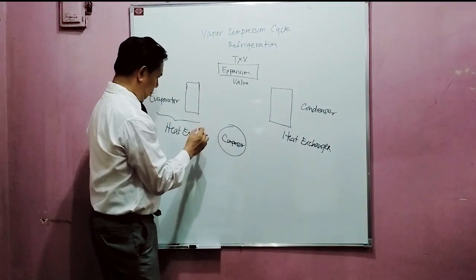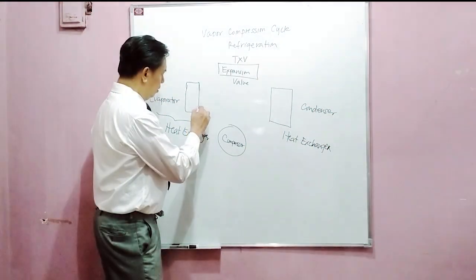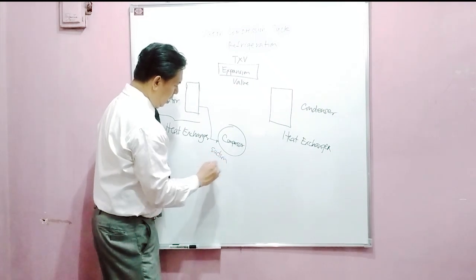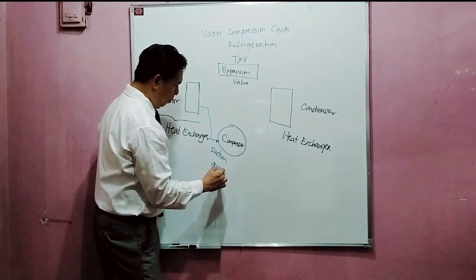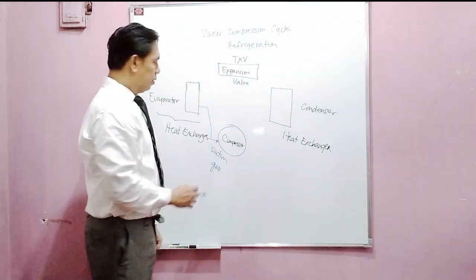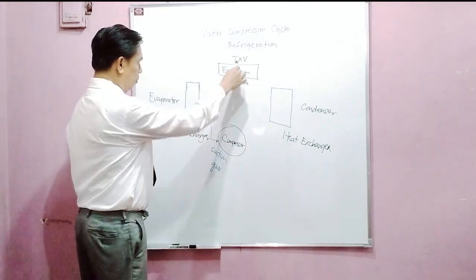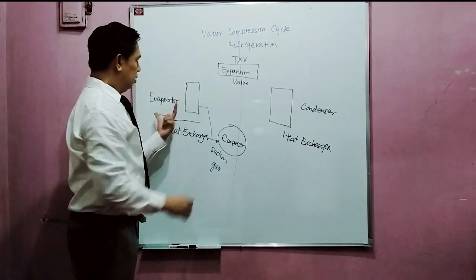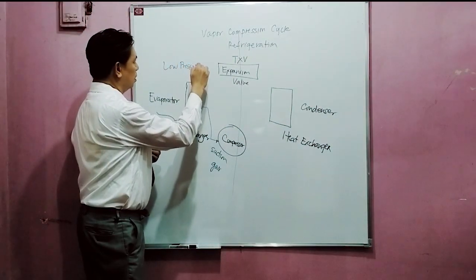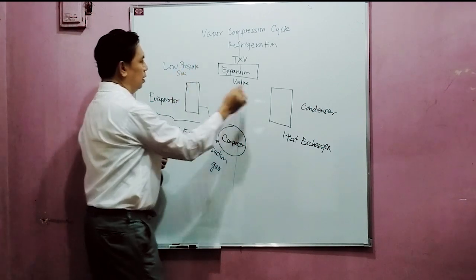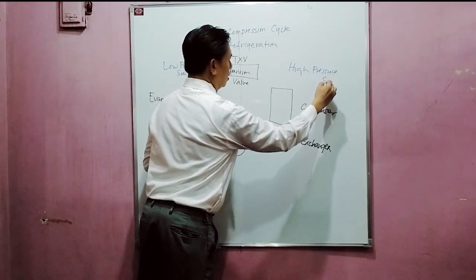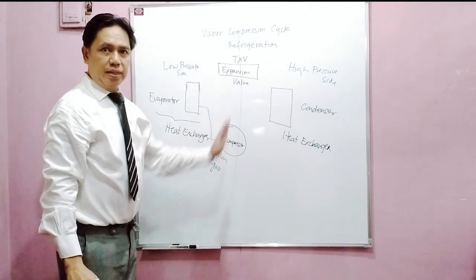So the cycle goes like this. Here is the compressor — the refrigerant will be coming in on the suction line in a gas or vapor form, and it will be compressed to higher pressure. This side on the left side is the low pressure side, and the other is the high pressure side, if you divide it vertically.